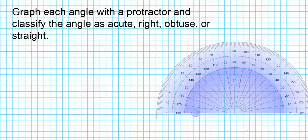The instructions for the examples are as follows: we are to graph each angle with a protractor and then classify the angle as acute, right, obtuse, or straight. For this tutorial you're going to be needing a protractor, a ruler or straight edge, and a pencil. I'm going to be making use of my virtual tools here, which can be replicated using your actual physical construction tools.